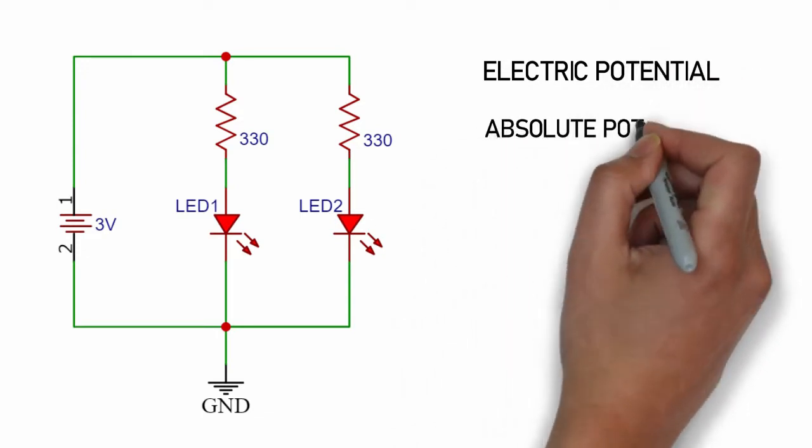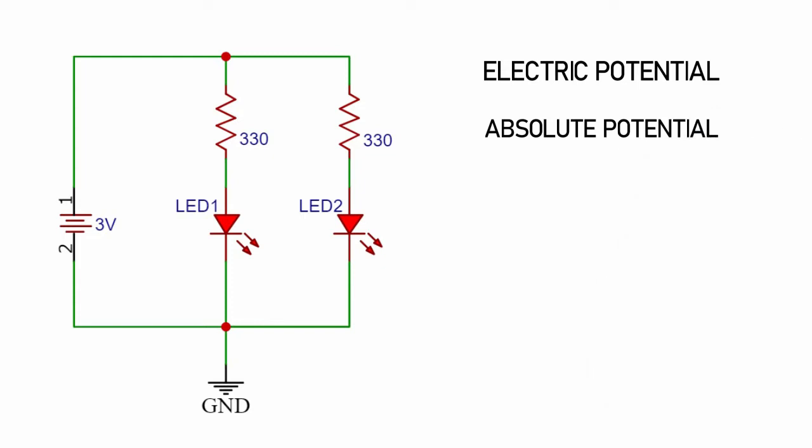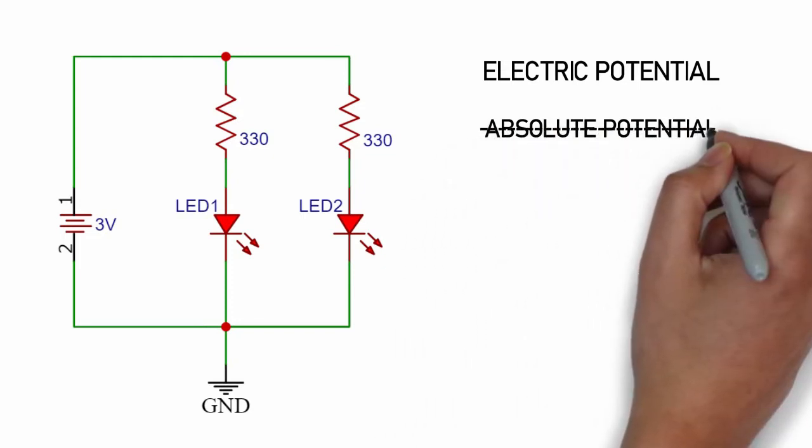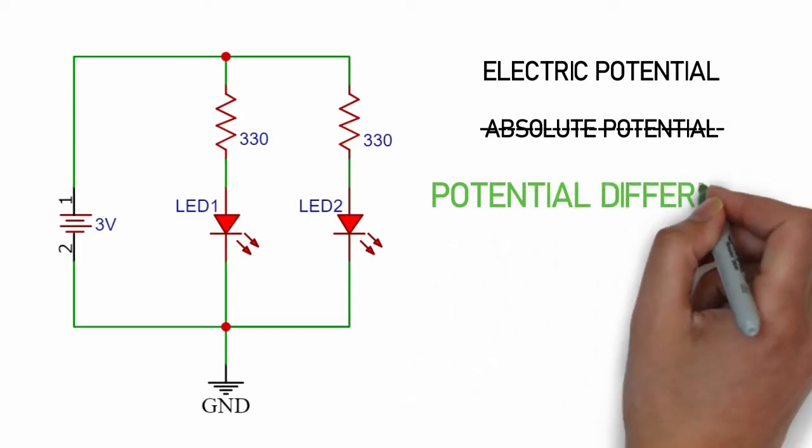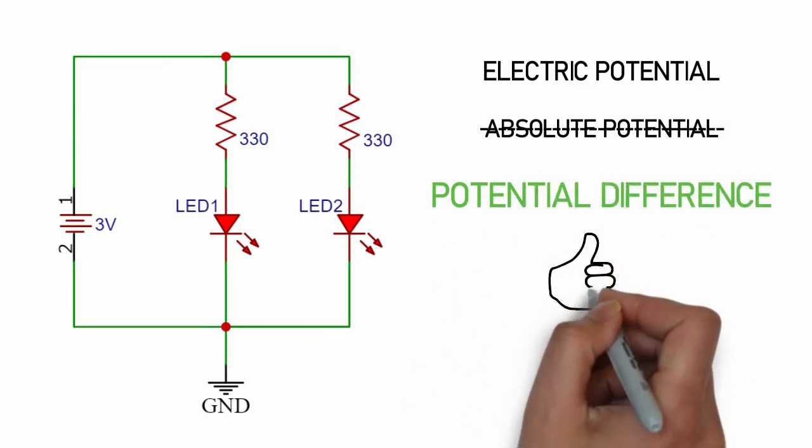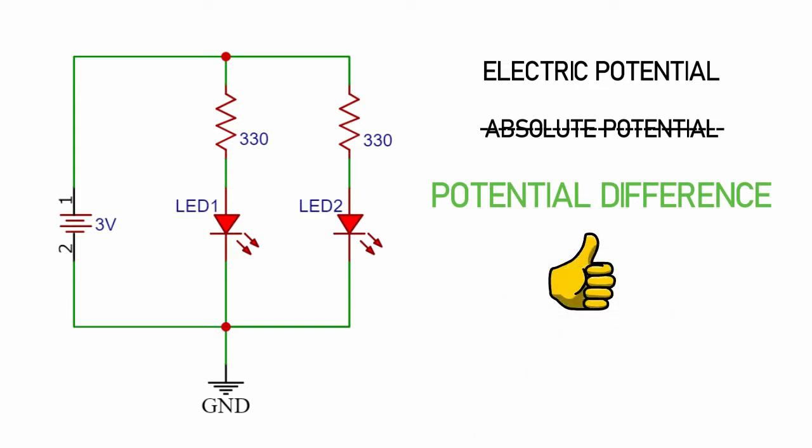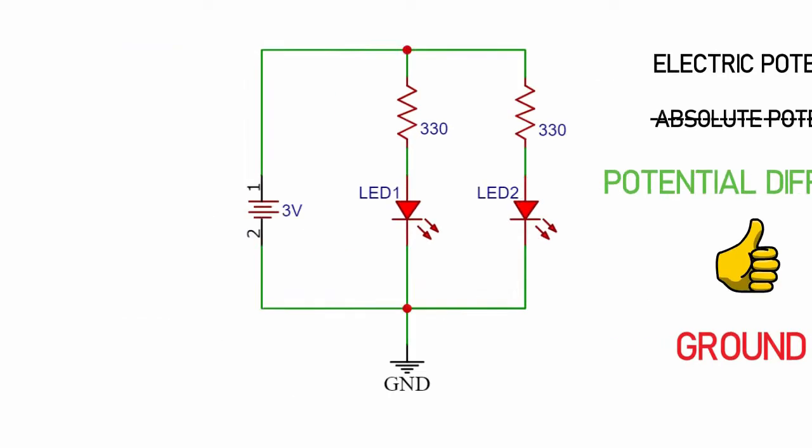The very first thing you should be clear about electric potential is that there is nothing like absolute electric potential. It is not possible for us to measure the absolute electric potential of a point. What we are actually doing is measuring the potential difference of that point with respect to some other point and this some other point is what we call the ground.